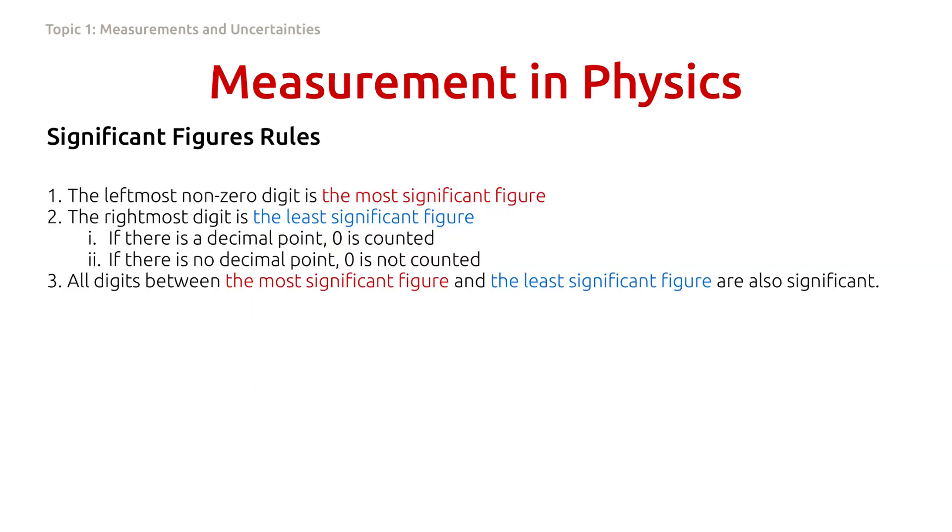From the previous observation, here are the rules to determine the number of significant digits, or significant figures in a number. Rule number one, the leftmost non-zero digit is the most significant figure.